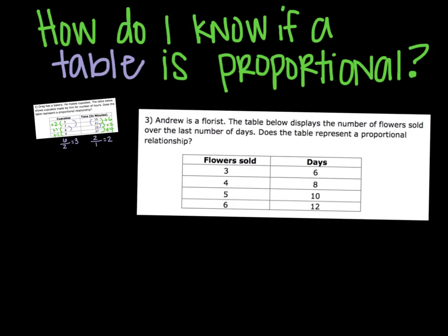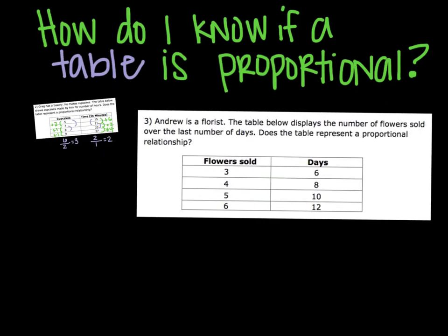Question number 3. Andrew is a florist. The number of flowers over the last number of days isn't proportional or not. So we're going to do the same thing. Change in y, and that's 2. Then this is 2, and this is 2. That's all the same. So that could potentially tell us it's the same. We've got to look at what is happening to our x.